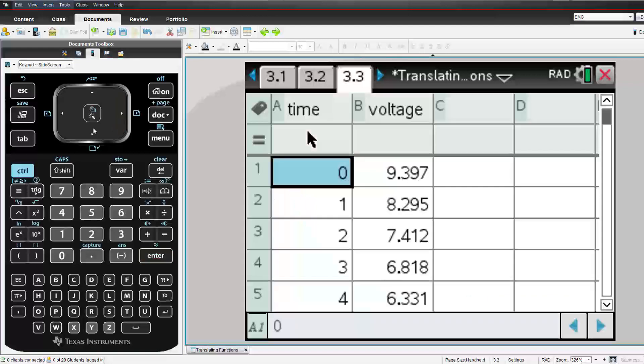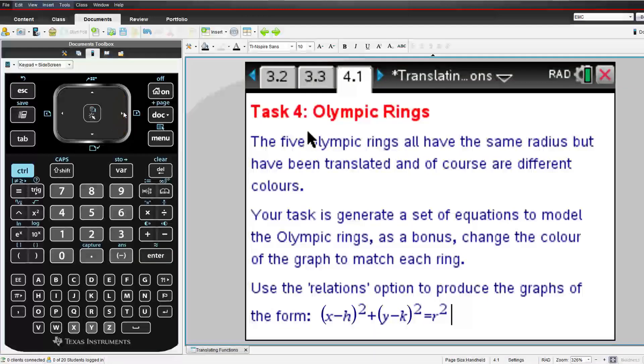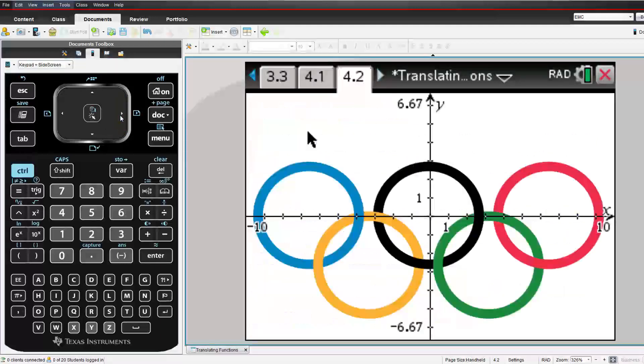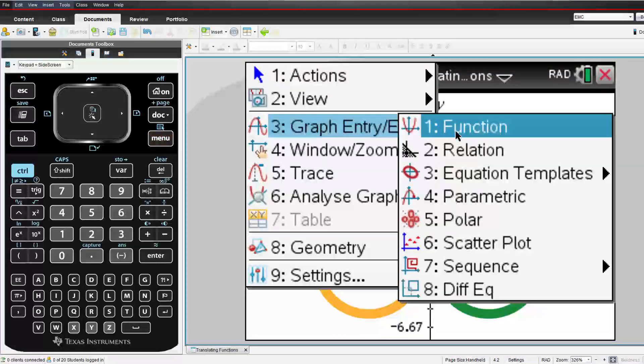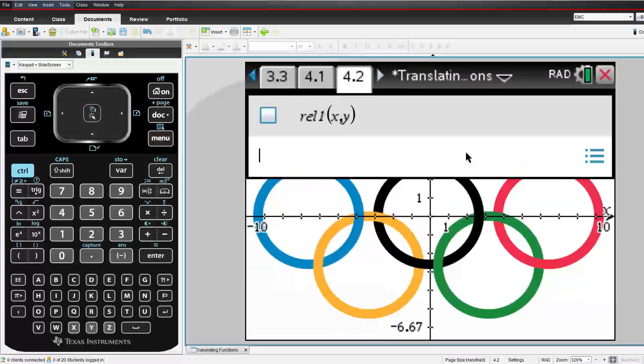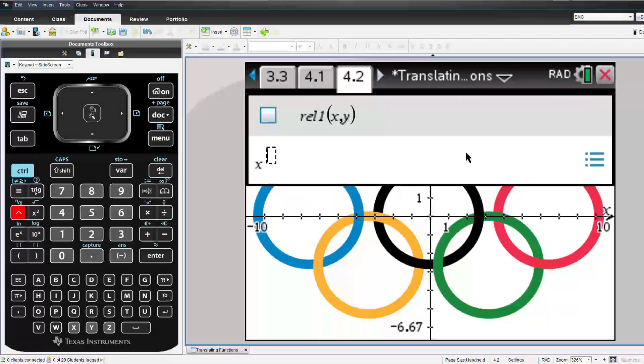The last data set in this activity is actually an image, an image of the Olympic rings. In this case students need to use a relation, so the first task is to change their graph type from function to relation. The other difference in this activity is students type the equation directly. We can see the basic form of x squared plus y squared equals r squared for our circle for the first ring.